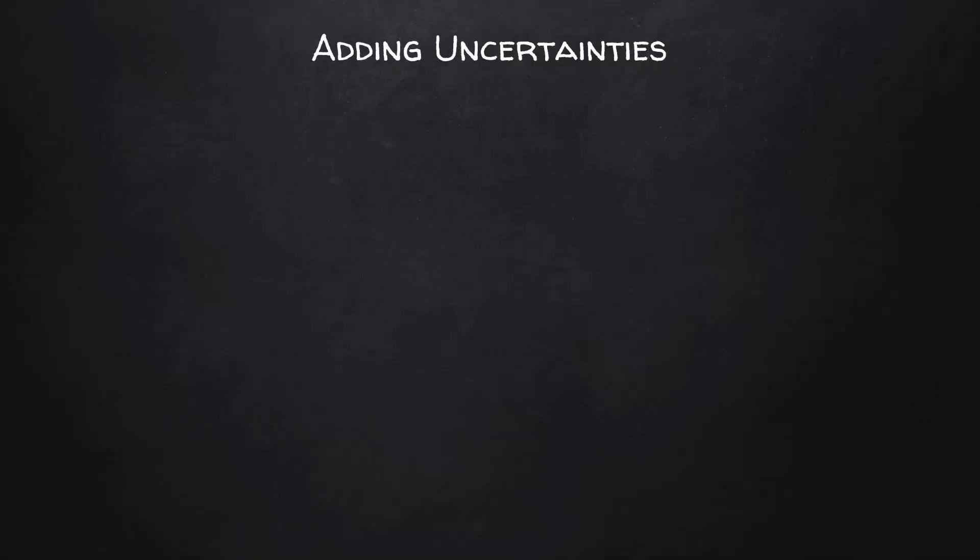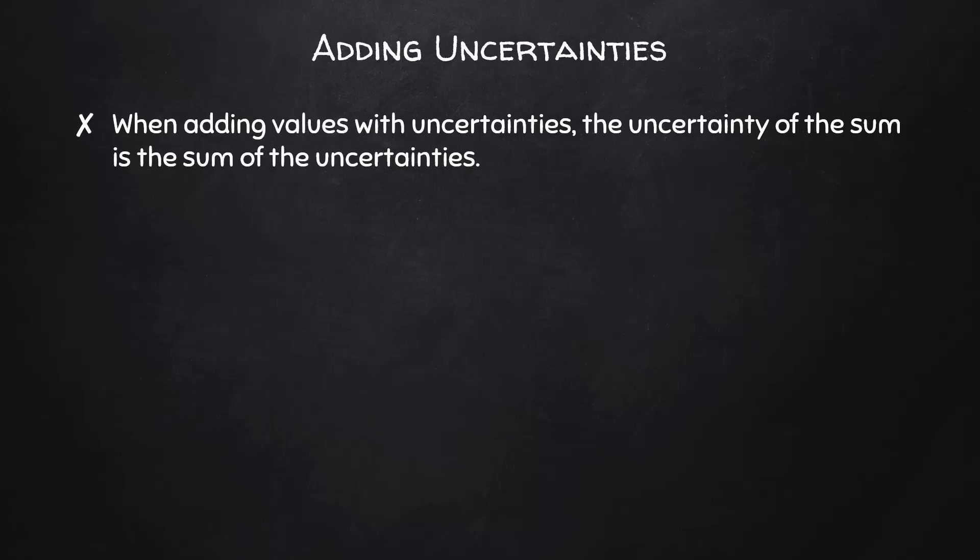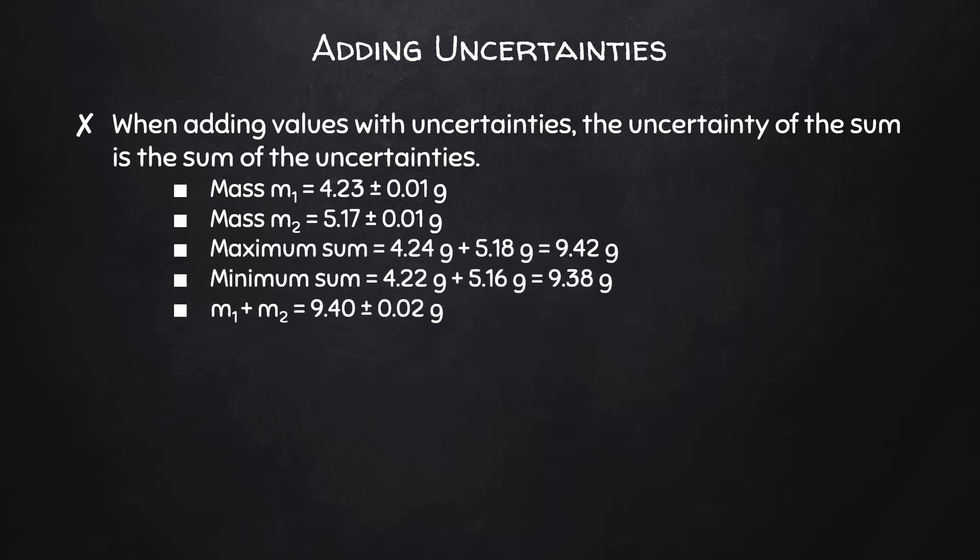Since we will often be using our measurements in a calculation, it's important to know how to propagate our uncertainties. When adding values with uncertainties, the uncertainty of the sum is the sum of the uncertainties. If we measured two masses on a balance, each with an uncertainty of 0.01 grams, then their sum would have an uncertainty of 0.02 grams.